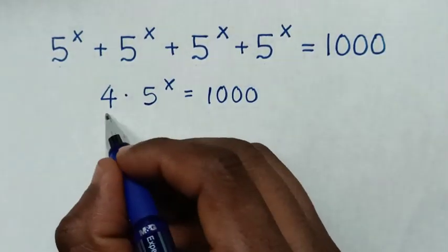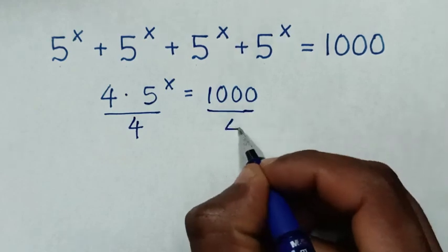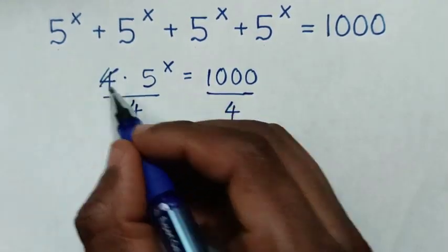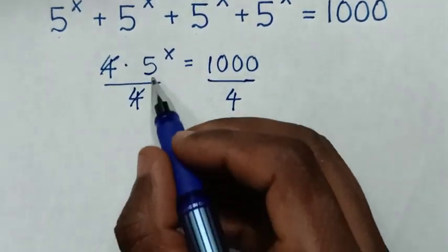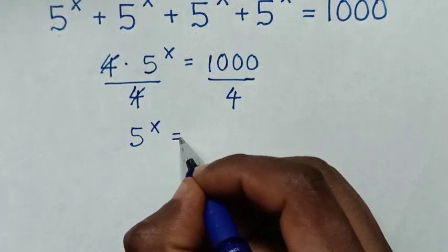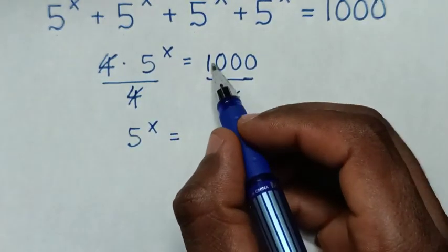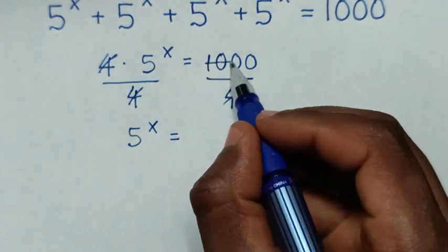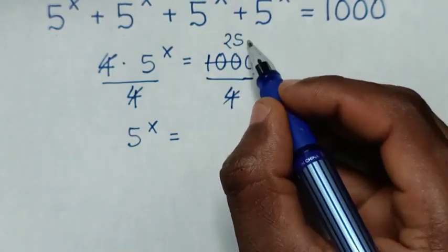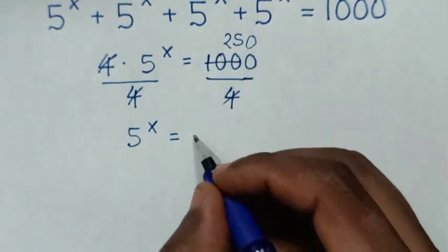Then in the next step, we will divide by 4 on both sides. This and this will cancel, then it will be 5 power x is equal to 1000 divided by 4, which is 250.